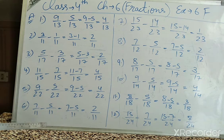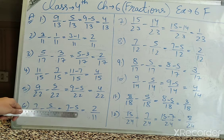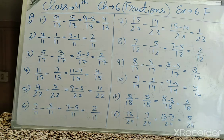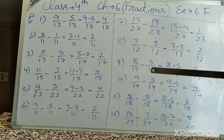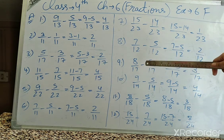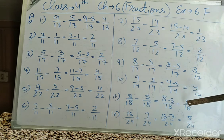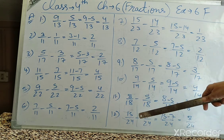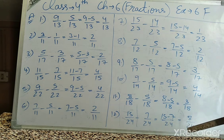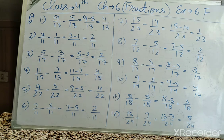Remember, the denominator must be the same. 7 upon 11 minus 5 upon 11 gives 2 upon 11. 15 minus 14 is 1 upon 23. 7 minus 5 is 2 upon 12. 17 upon 17 minus 5 upon 17 is 3 upon 17. 9 minus 5 is 4 upon 14. 8 minus 5 is 3 upon 18. And finally, 15 upon 24 minus 7 upon 24 gives 15 minus 7 which is 8 upon 24. Our 6F exercise is also complete.